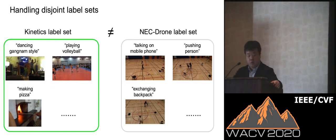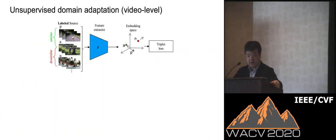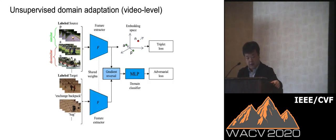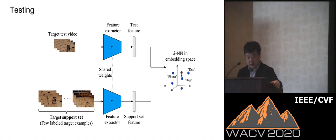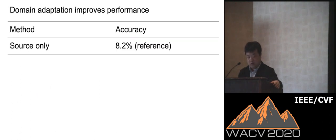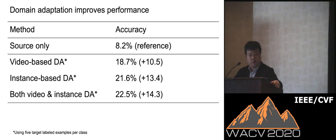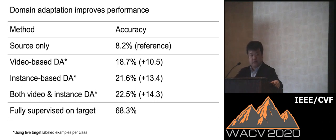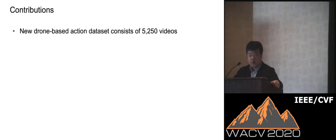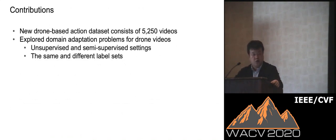We also explore a more practical situation where the source and target label sets are disjoint. In this case, instead of using cross-entropy, we formulate the problem as metric learning and employ triplet loss in the embedding space. To align source and target features, we employ adversarial loss. During testing, we need a support set — a few target labeled examples per class — and perform nearest-neighbor classification. Source-only baseline shows 8% accuracy; video-based domain adaptation improves performance more than double; instance-based and the combination further improve performance. Contributions: we collected a new dataset, introduced challenging domain adaptation problems for action recognition from drones in unsupervised and semi-supervised settings, and same and disjoint label set settings. Thank you.